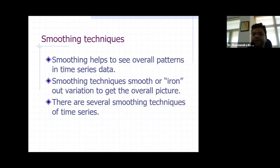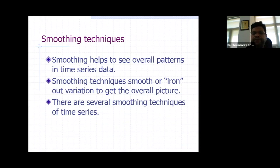Now, smoothing techniques. Smoothing means identifying the components and removing them one by one from the time series. Smoothing helps to see overall patterns in time series data — the techniques smooth out variation to get the overall picture. There are several smoothing techniques in time series.